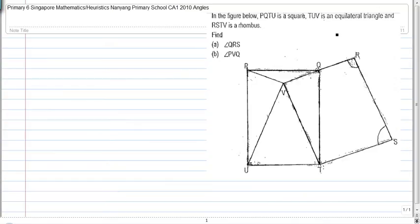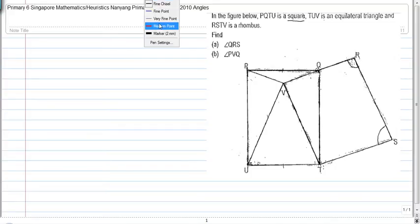Alright, so in the figure below, PQTU is a square. What are the properties of a square? All sides of a square are equal, so this side is equal to this side, which is equal to this side.